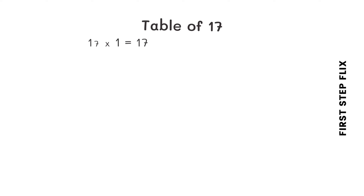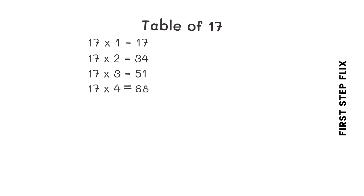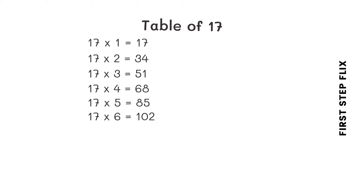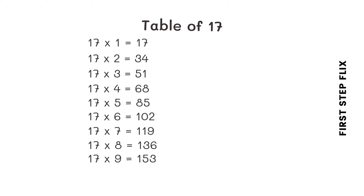Let's repeat one more time. 17 ones are 17. 17 twos are 34. 17 threes are 51. 17 fours are 68. 17 fives are 85. 17 sixes are 102. 17 sevens are 119. 17 eights are 136. 17 nines are 153.